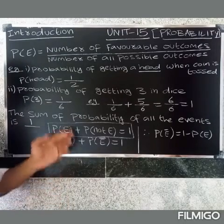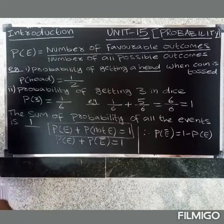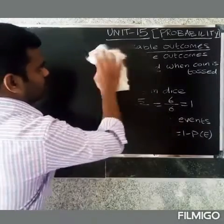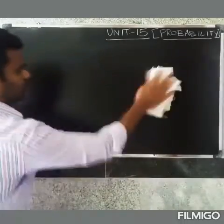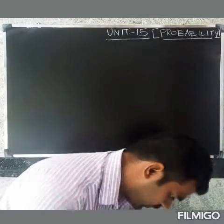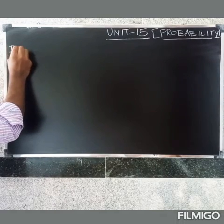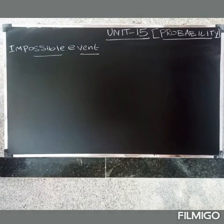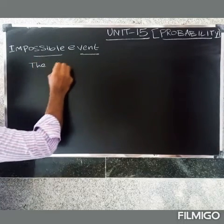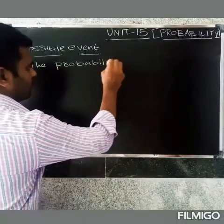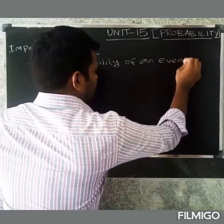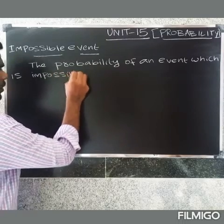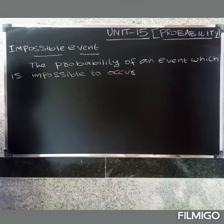Next, there are two special events. The first is an impossible event — an event whose probability is zero because it is impossible to occur.